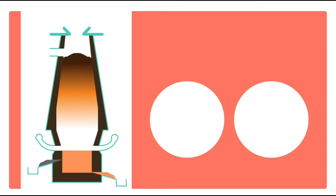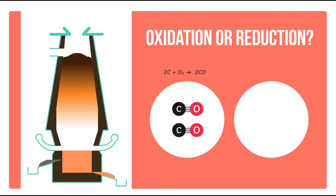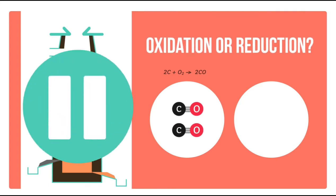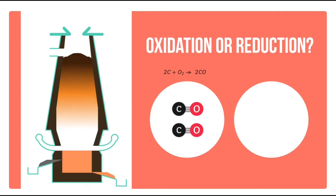Usually, the furnace is not hot enough for the coke to react directly with the iron oxide. Coke reacts with oxygen in the air to form carbon monoxide. Is this an oxidation or a reduction? Pause the video for a moment to work it out. In fact, oxygen is gained by carbon to form carbon monoxide, so this is an oxidation reaction. Did you get that right?